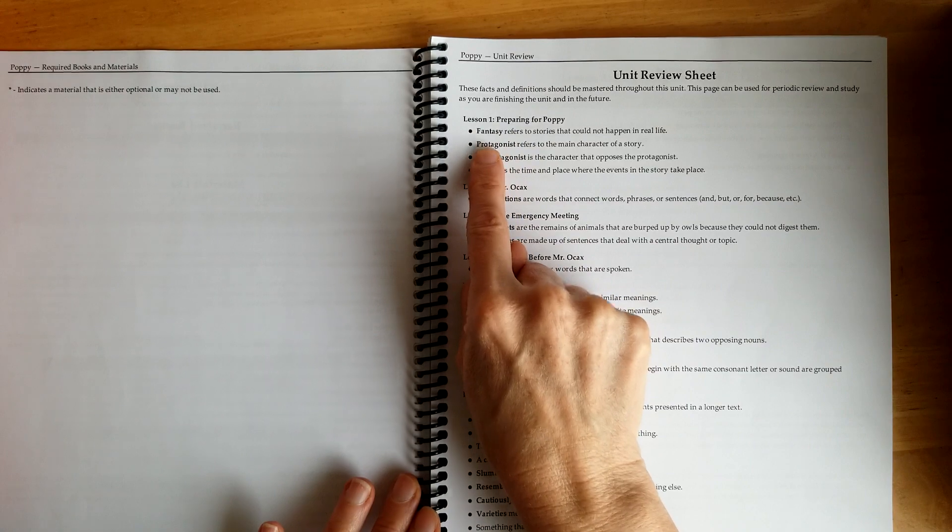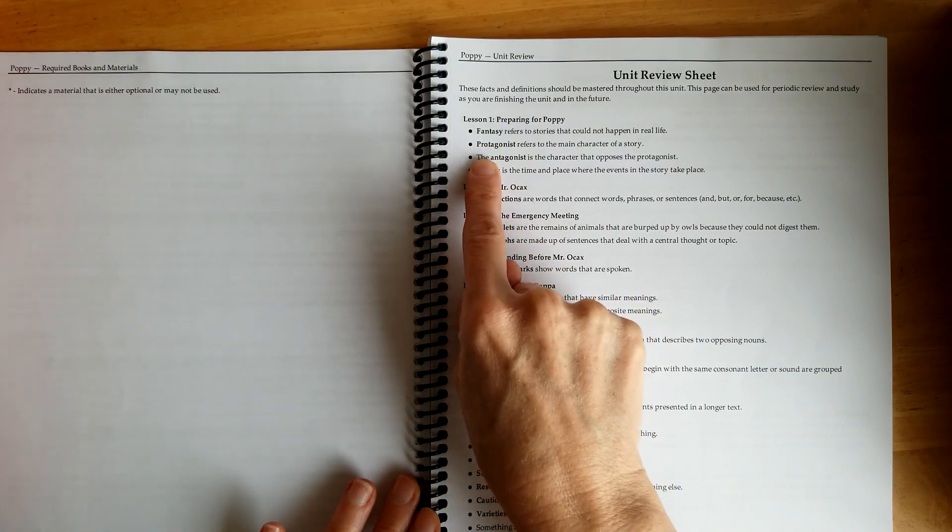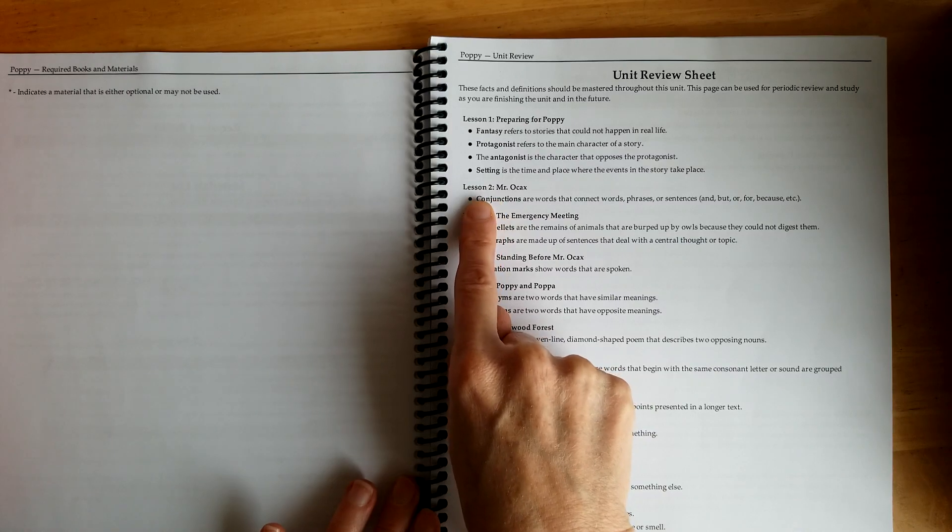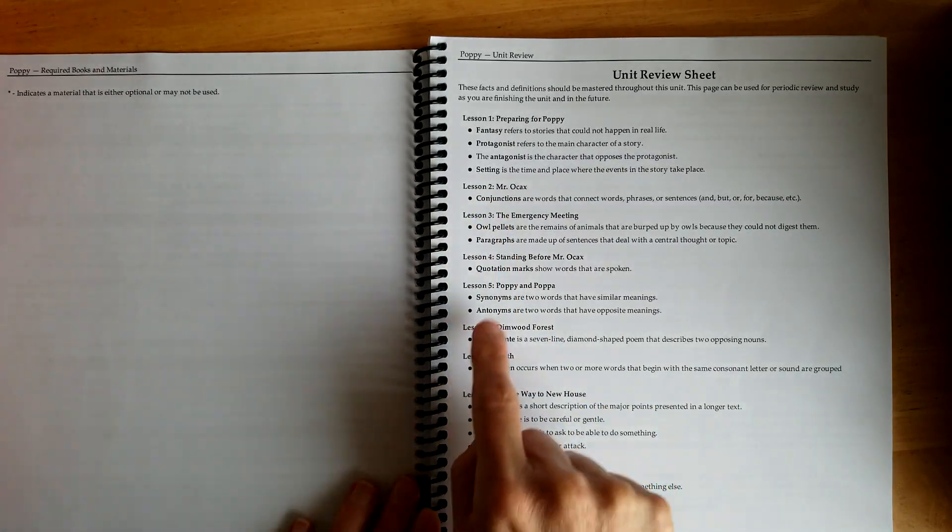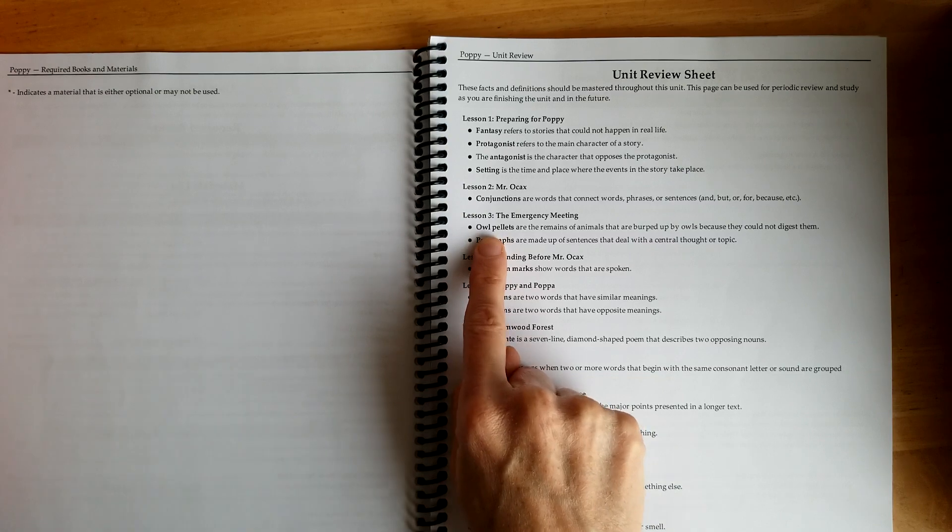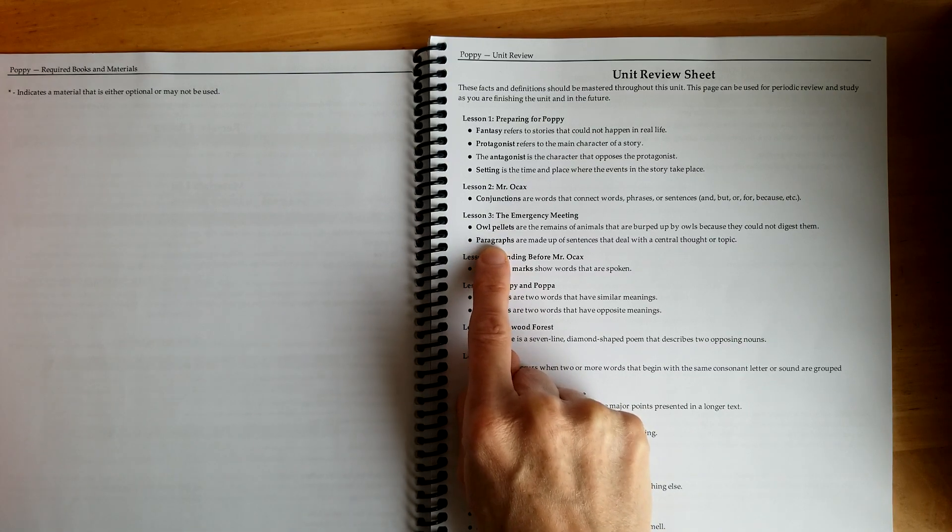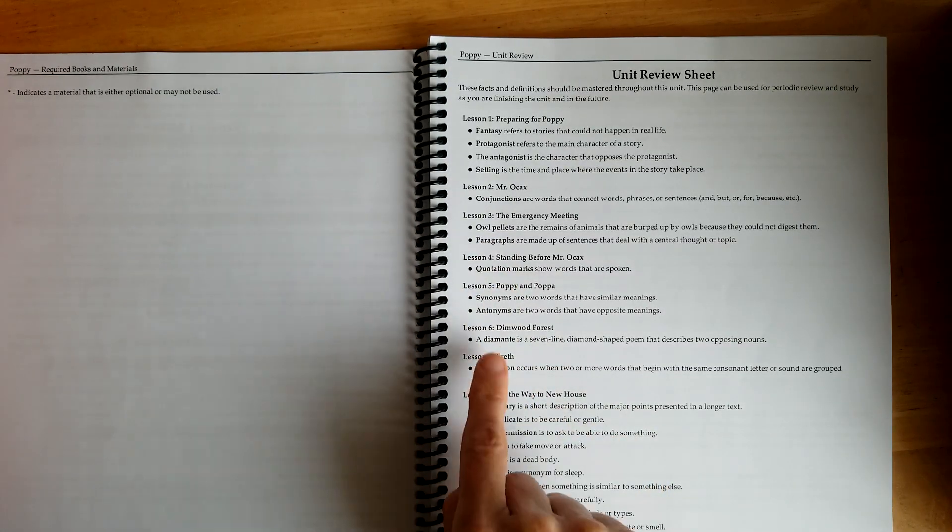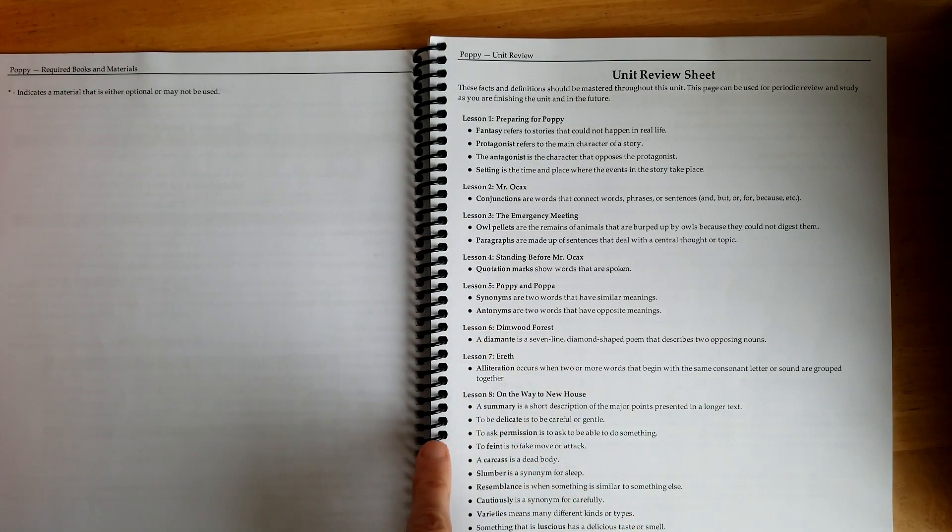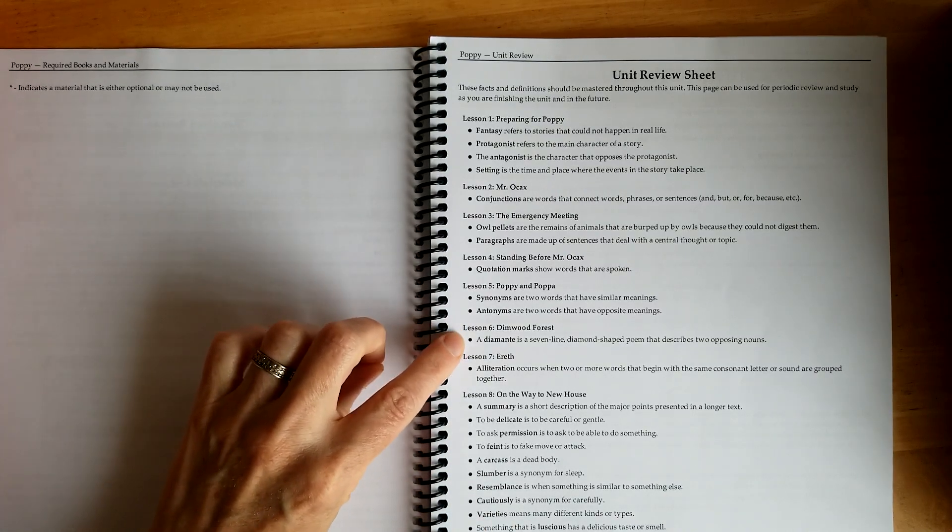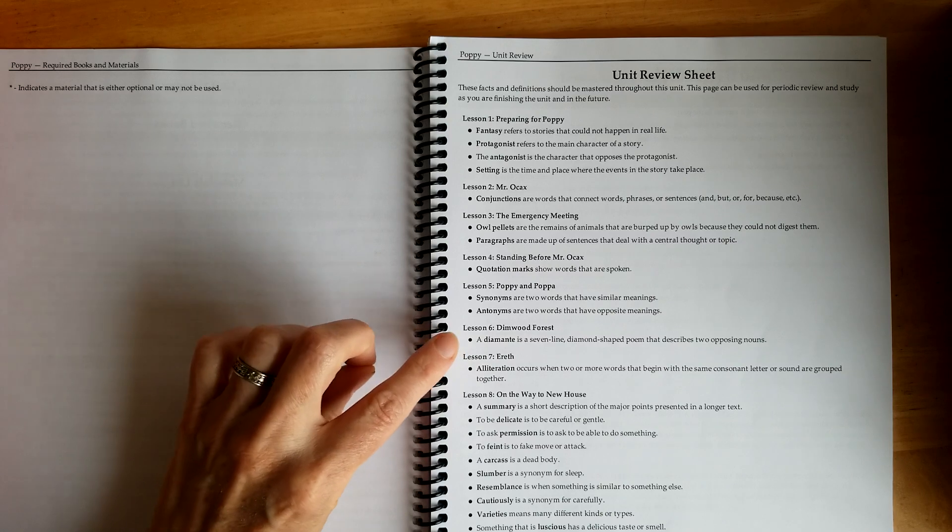Lesson one, preparing for Poppy, talks about fantasy, protagonist, antagonist, setting. Lesson two goes over conjunctions. There's owl pellets - this comes with a package of owl pellets for the kids to dissect, and that's really fun. It goes over paragraphs, quotation marks, synonyms, antonyms, and diamante poem, which I hadn't known what that was until this unit. That was kind of fun.